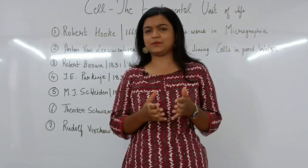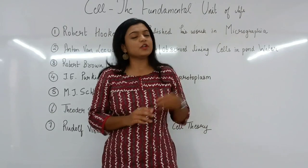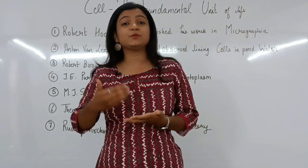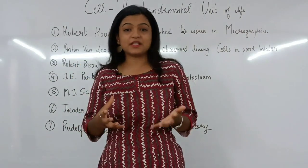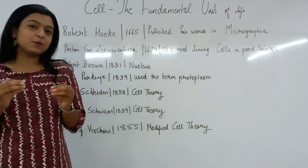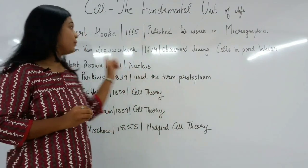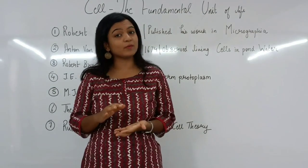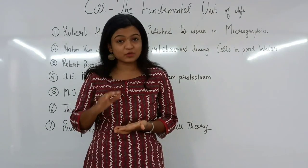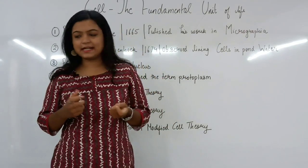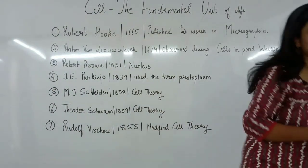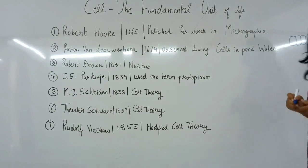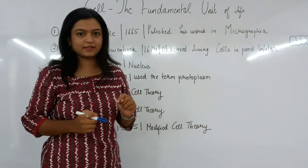How did we actually get to this point where we started understanding cells so well? The cell was first discovered by a scientist named Robert Hooke in the year 1665. He made a compound microscope on his own at his home and observed cells using it. He observed small compartments — small boxes — and he named these boxes as 'cell.' That is how cells were first discovered.